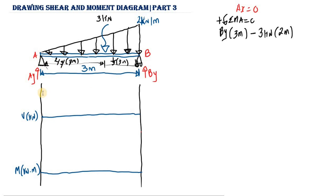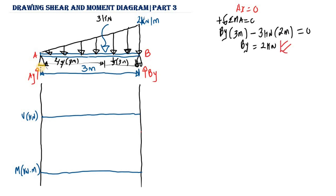Ay produces no moment because it acts at point A, which is where we are taking the moment. So setting the equation to zero and solving for By gives By = 2 kN. This is the vertical reaction at point B.